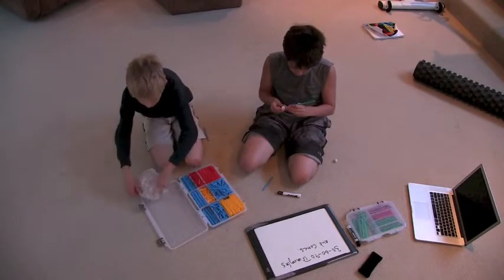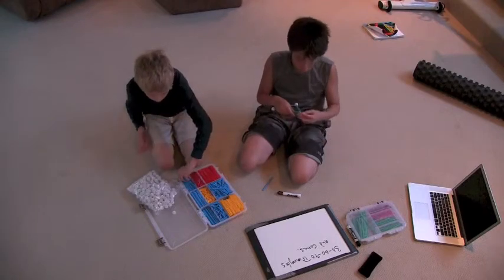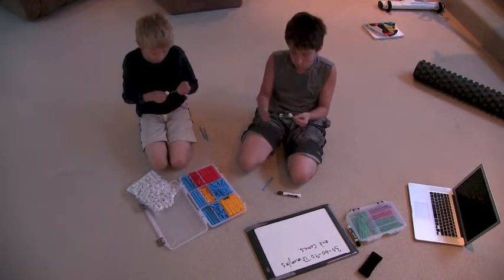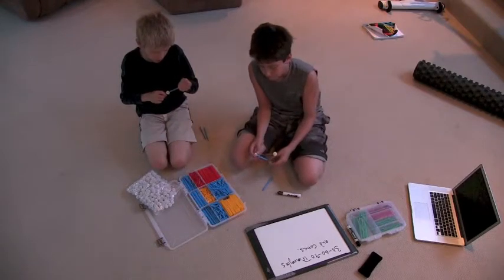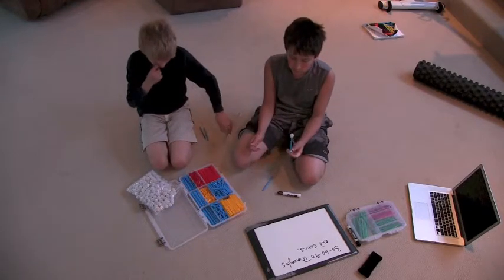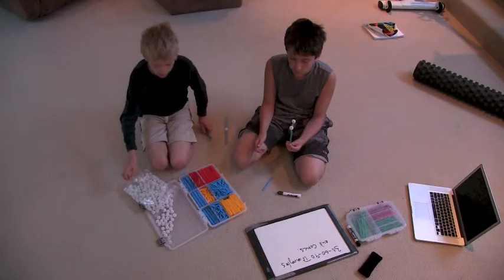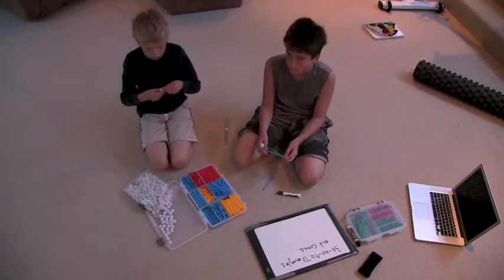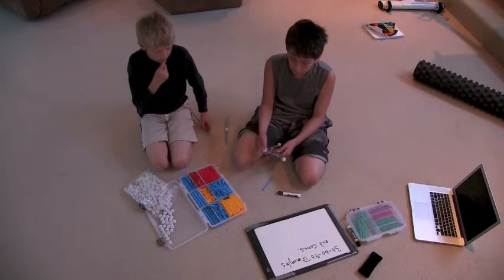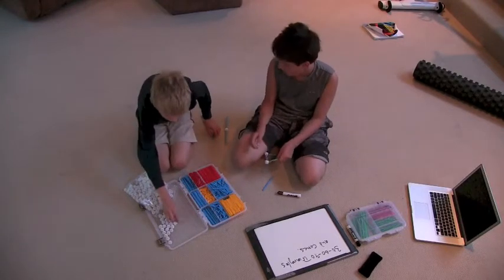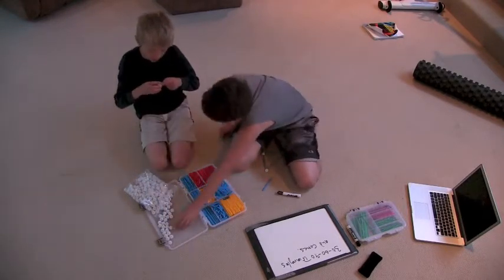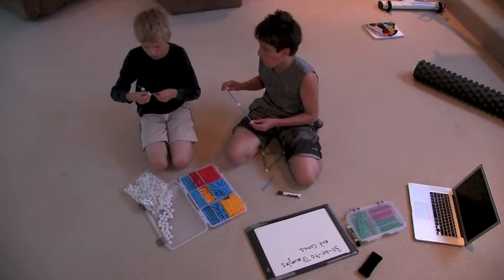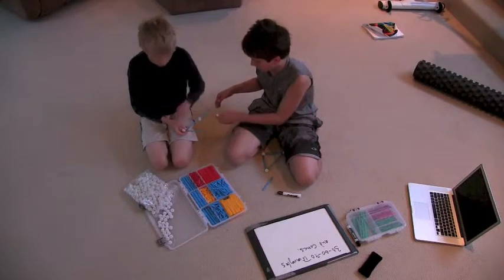And while you're doing that, while you're building that, let's talk about what the lengths are. Well, we call each of these blue struts one. All right. And these side lengths would be two. If each of the blue struts is one, the side lengths would be two. Can you help your brother now? So we're going to build an equilateral triangle. Each of the side lengths would be two.